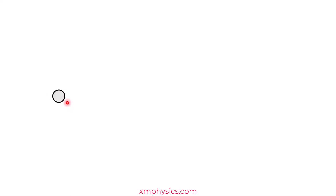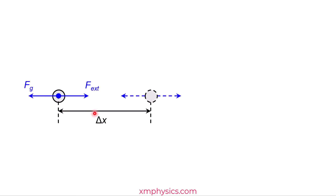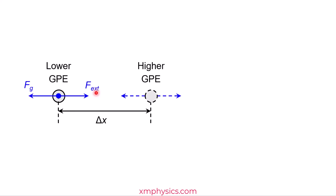We have a mass here which is experiencing a leftward gravitational pull. So if we want to move the mass rightward, we have to apply an external force that's equal in magnitude but opposite in direction. Let's imagine that we manage to move the mass a tiny distance of delta x rightward. So has the mass gained or lost GPE? It has gained, because the external force overcomes the gravitational pull to move you rightward.